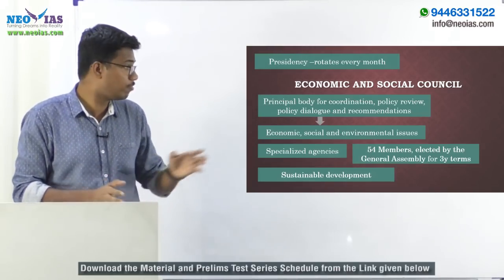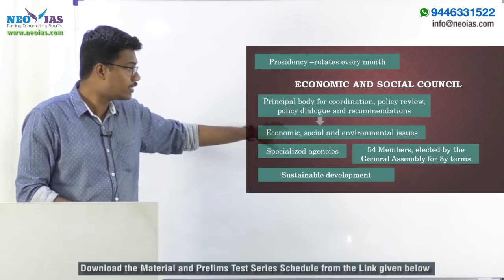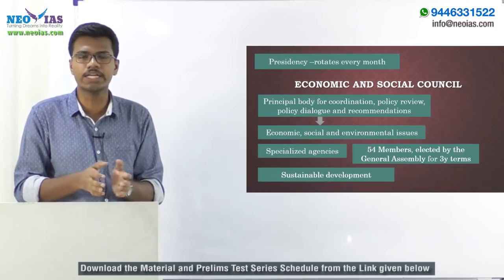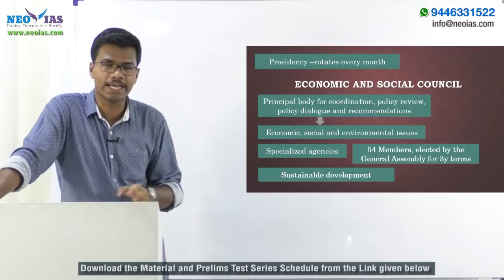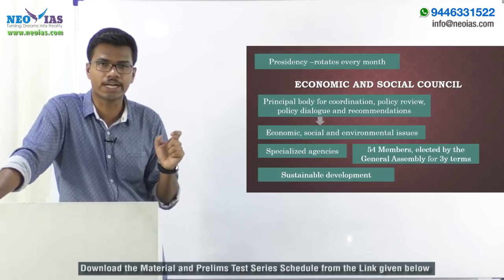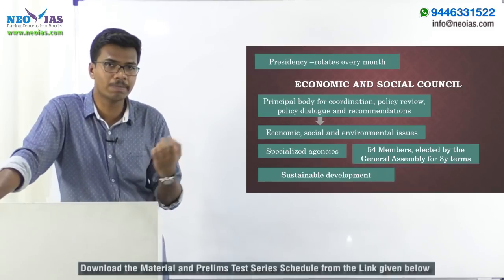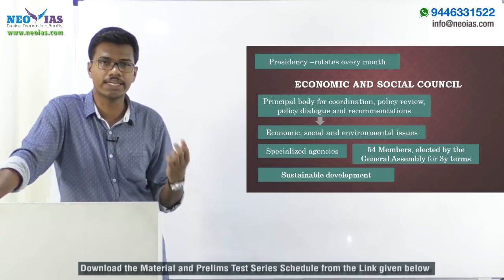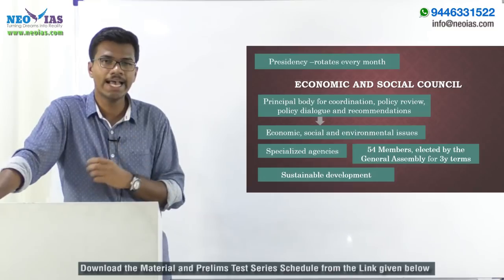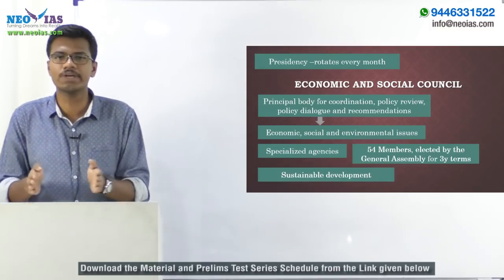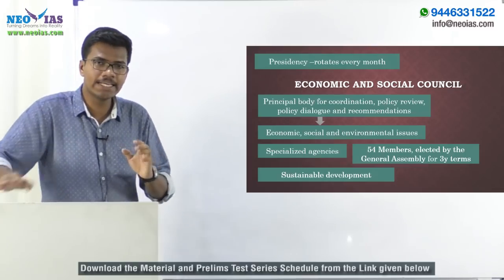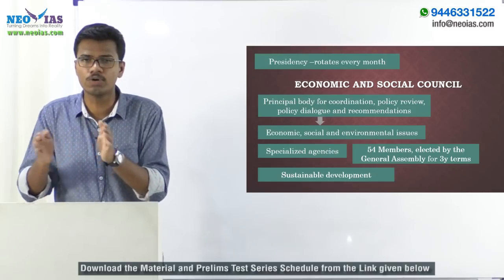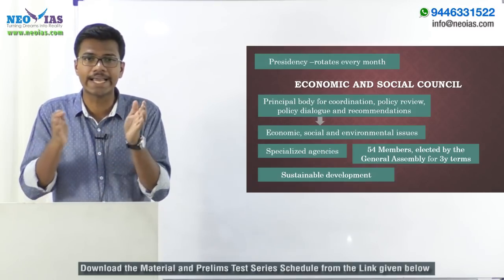ECOSOC has 54 members elected by the UN General Assembly for a three-year term. Recently, ECOSOC was in the news because India was a member whose membership was set to expire on December 31, 2017. However, in June 2017, India was re-elected for the next three years. Another major aim of ECOSOC is to contribute to the implementation of sustainable development goals and other internationally agreed development goals.